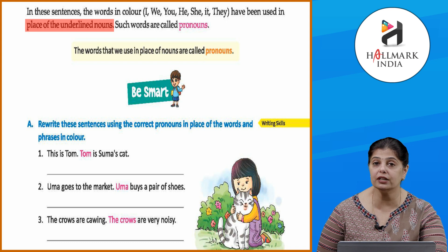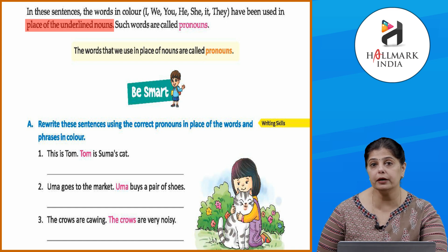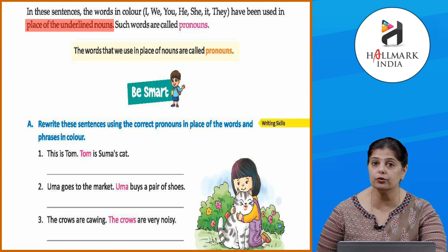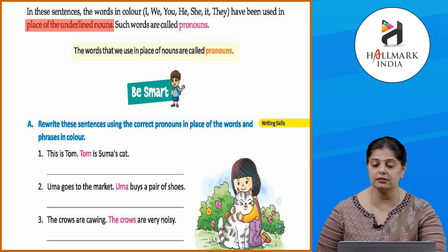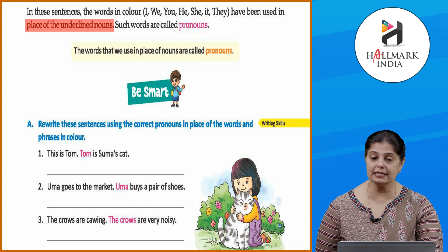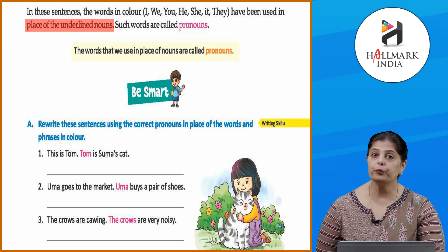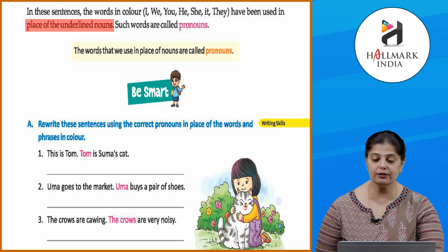Instead of repeating the word Tarun, we have used 'I' — 'I' has replaced the name Tarun. We are talking about the same person. So instead of writing 'Tarun is eight years old,' Tarun is telling us 'I am eight years old.' Similarly, instead of writing 'Tarun has two brothers and sisters and they play together,' we use pronouns: 'I have two brothers and sisters, we play together.' Tarun has used pronouns like I and we.